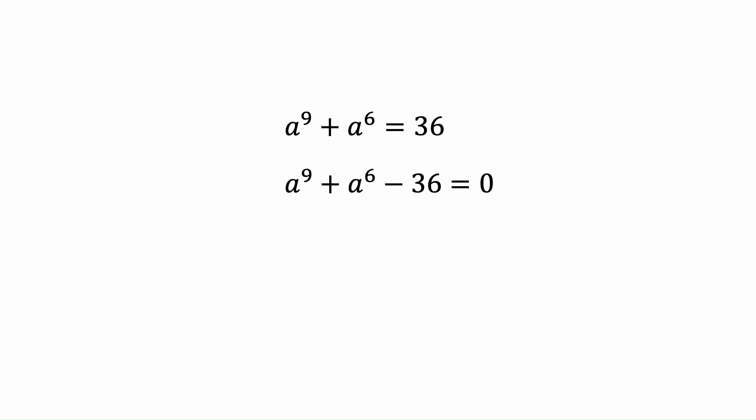We can bring 36 to the left side and it's gonna equal 0. And I wrote 36 by summation of two numbers 27 and 9. So we have a to the power 9 plus a to the power 6 minus 27 minus 9.